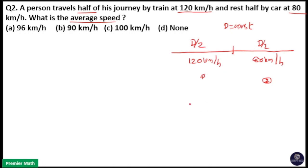So distance is same here. That means you can use the formula for average speed equal to 2 s1 s2 divided by s1 plus s2. That is 2 into first speed 120, second speed 80, and 120 plus 80 is equal to 200.